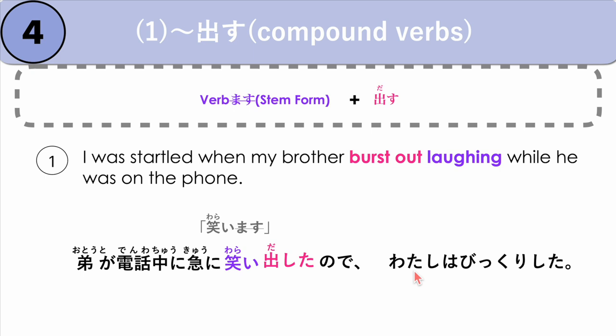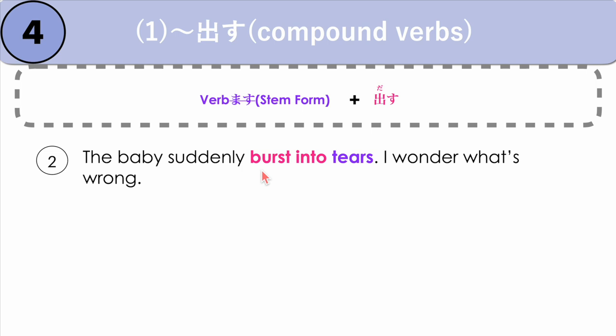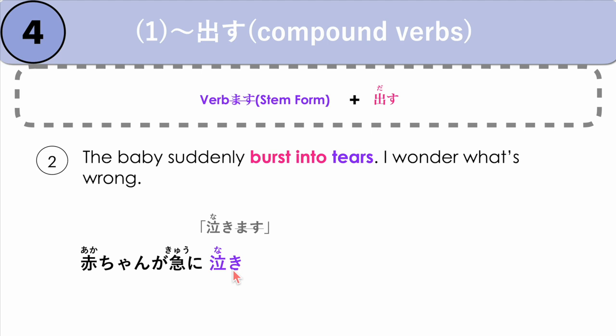Another example: the baby suddenly burst into tears. I wonder what's wrong. Aka-chan ga kyuu ni — the baby suddenly — our verb is to cry, which is nakimasu. We say naki plus dasu: naki dashita. Again, this is in past tense, followed by: I wonder what's wrong — doushitan darou. Aka-chan ga kyuu ni naki dashita. Doushitan darou.